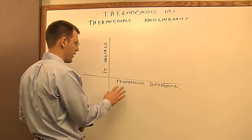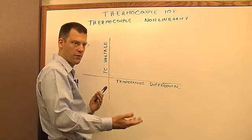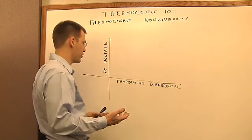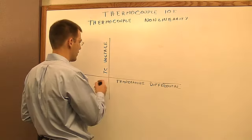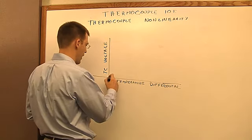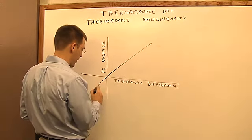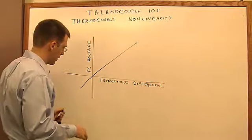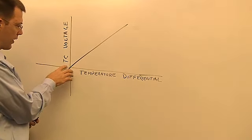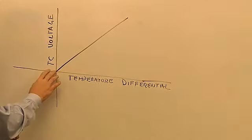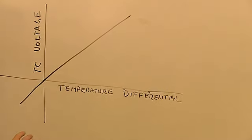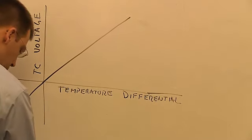If you were to plot the temperature differential, so the difference between the measurement junction and the reference junction, versus the thermocouple voltage that you get out of the thermocouple, you'd get something that looks pretty straight. Notice that the line goes through when there's no temperature differential, you're not going to get any voltage out, and you get something that to the naked eye looks pretty straight.